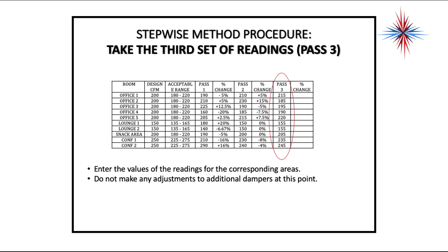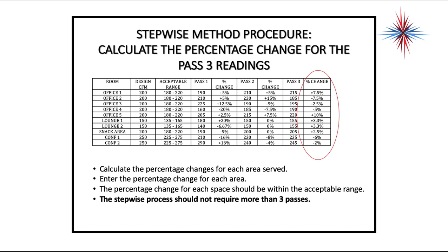Take all readings for Pass 3 without making any adjustments, then calculate the percentage of change. One location — Office 5 — is at 10%, which is right at the margin of error. If this were my customer, I'd probably pull that down just a little bit, but not much — I don't want to affect anything else badly. The stepwise process should not require more than three passes. If you do this correctly, three passes is all it takes, as long as you have enough airflow to start with.